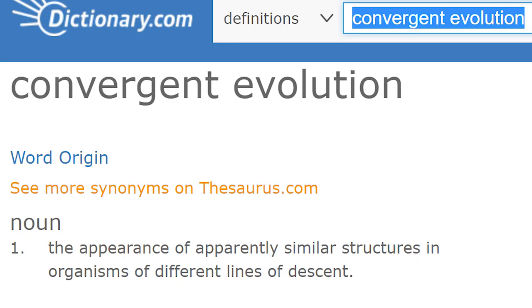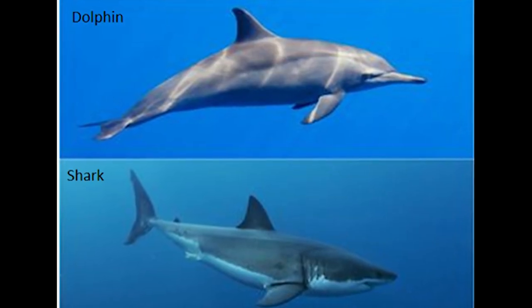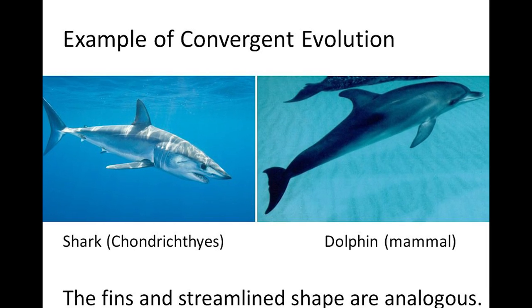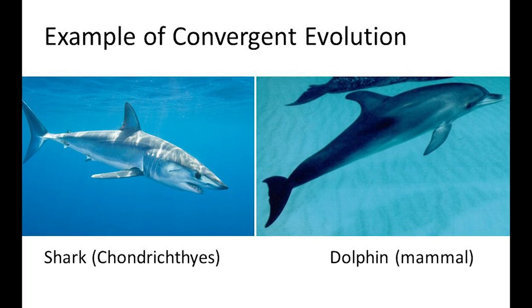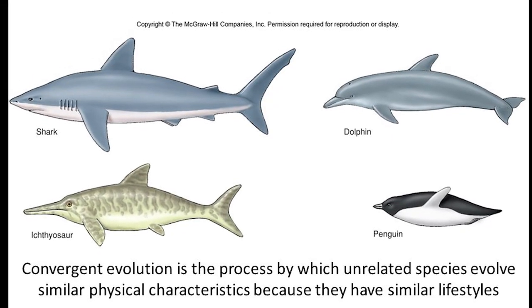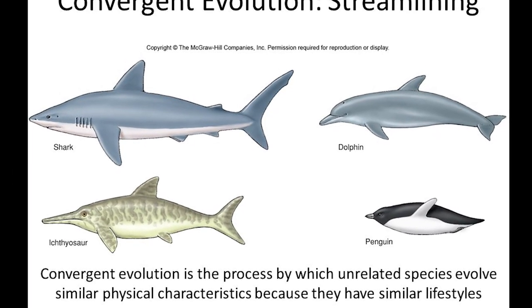Convergent evolution is when two creatures that are not closely related develop similar traits due to their environment. Some examples of this are sharks and dolphins since they do not have a close relationship in the evolutionary tree. Sharks are fish and dolphins are mammals. But because they live in similar environments, natural selection has caused these two species to evolve similar features, like a long sleek body to move swiftly to the water.